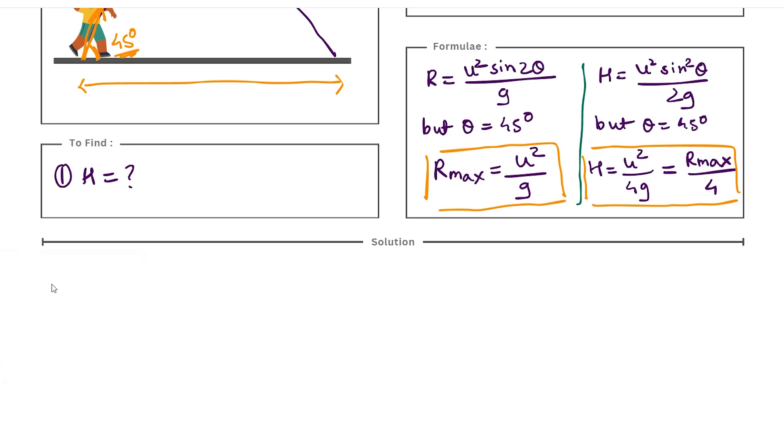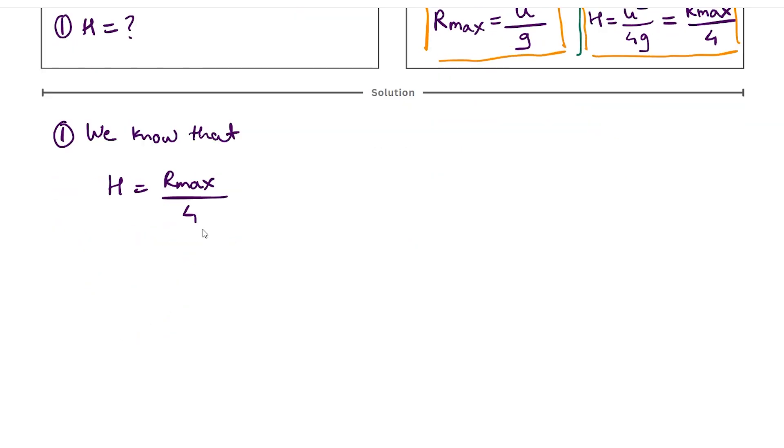So hence we started with two formulas but we came at one hybrid formula and that's the only piece of formula that we are going to actually use. So first we will write that we know that H = R_max/4 for a special condition when my range is maximum, and we know that range value is 80. So 80/4. Therefore H is equal to 20 meters.